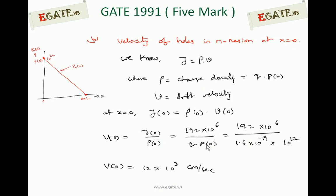Next, the velocity of holes in the N region at X equal to 0. We know the relation between velocity and current density: current density is the product of the velocity of charge carriers multiplied by charge density, J equal to rho into V, where rho is charge density. We can write charge density as Q into P(X), and velocity is the drift velocity of charge carriers. At X equal to 0, the equation becomes J(0) equal to rho(0) into V(0).